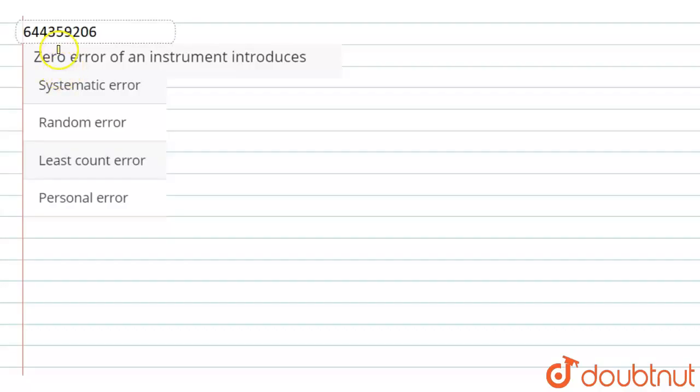Hello dear students, here the question is: zero error of an instrument introduces - option one: systematic error, option two: random error, option three: least count error, and option four: personal error.